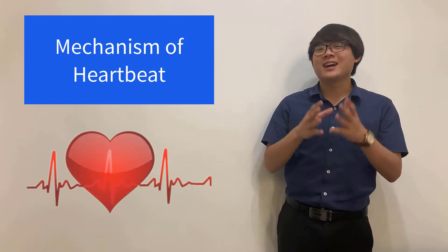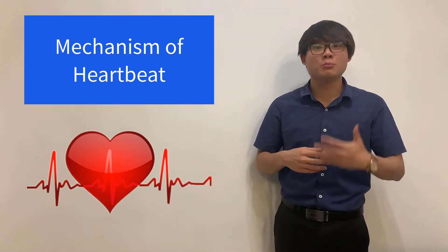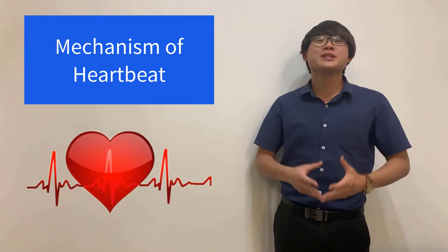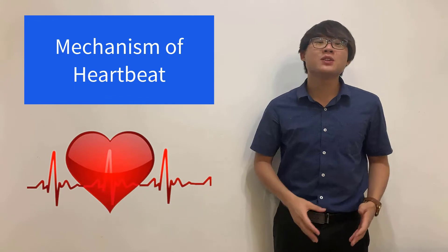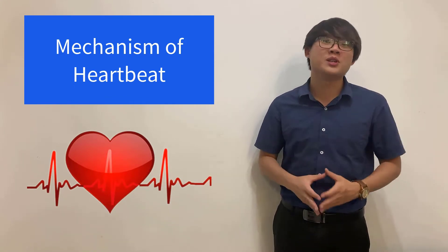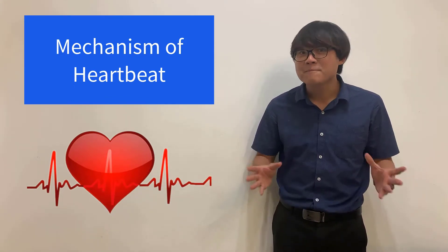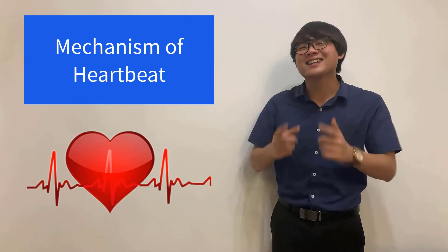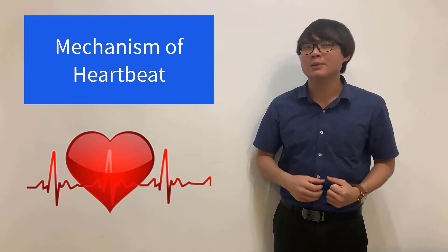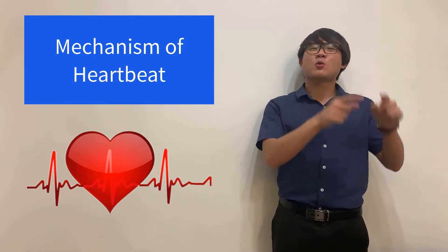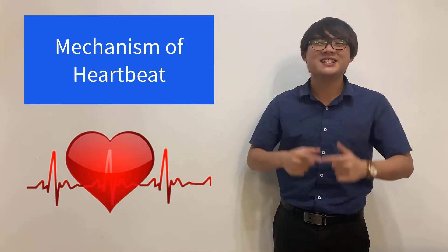We all understand that the heart pumps blood throughout the body to get nutrients and oxygen to our body cells and waste products out of our body cells to the excretory organs. So how exactly is the heart pumping the blood? This is the question that we want to answer in this video.